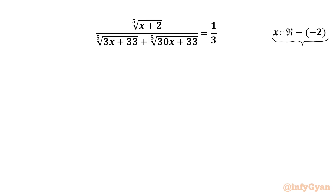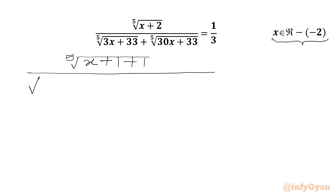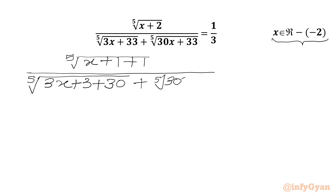Let us get started by writing our equation: 5th root of (x+2), where we can write x+2 as (x+1)+1, in the numerator. In the denominator we will write 5th root of (3x+33), written as (3x+3)+30, plus 5th root of (30x+33), written as (30x+30)+3. In RHS we have one third.